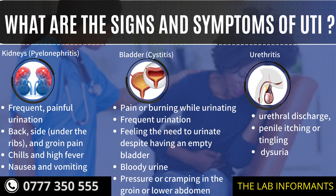Some of the signs and symptoms of UTI to the bladder, which is cystitis, include pain or burning while urinating, frequent urination, a feeling of needing to urinate despite having an empty bladder, bloody urine, and pressure or cramping in the groin or lower abdomen.